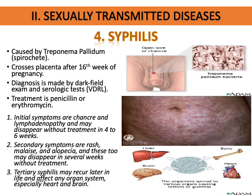The fourth STD is syphilis, caused by the spirochete Treponema pallidum. It is dangerous for the fetus because it crosses the placenta after the 16th week of pregnancy. Diagnosis is made through dark field examination and serologic testing — the VDRL or Venereal Disease Research Laboratory test. Treatment is penicillin or erythromycin. The triad of symptoms includes a chancre — an open sore on the genitalia — and lymphadenopathy.